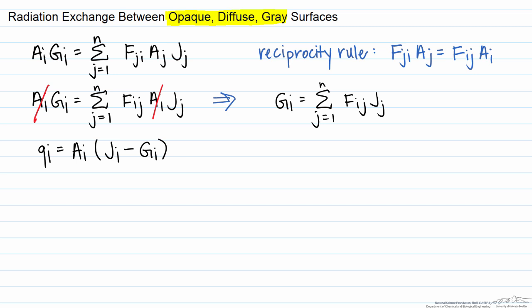We can now write it in terms of this heat transfer, and this equals our area, the radiosity from i minus the summation from j equals 1 to n, Fij times Jj. Now we're going to use a little mathematical trick.